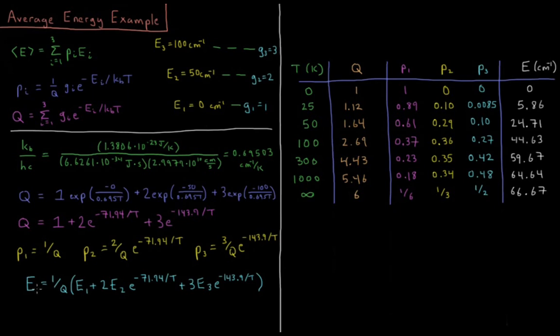So our total energy is each of these probabilities times the energy of that level. So the energy is equal to 1 over q times p1e1, which is 1 over q times e1 plus 2e2 e to the minus 71.94 over t plus 3e3 times e to the minus 143.9 over t. So this is actually our total energy as a function of the temperature.